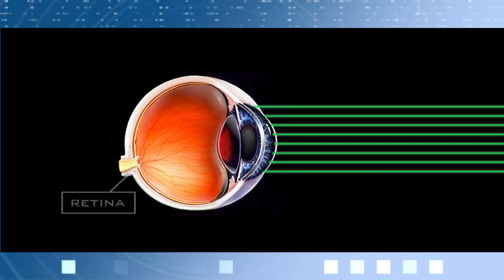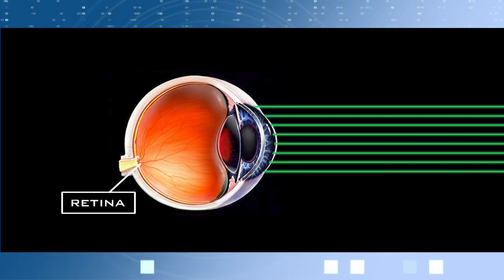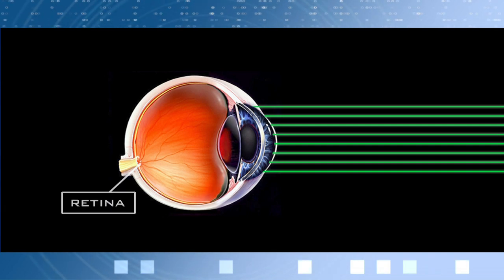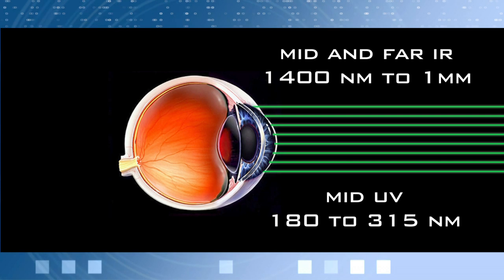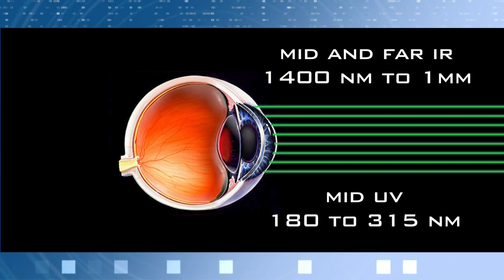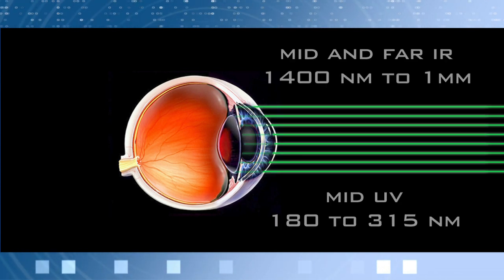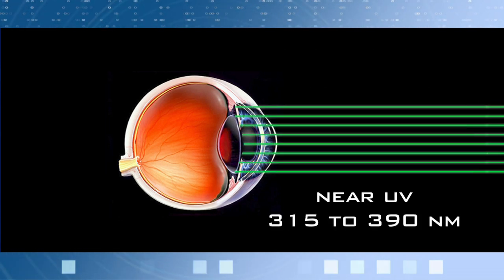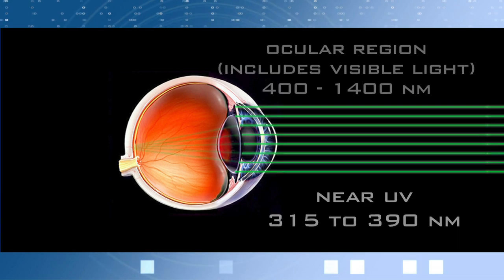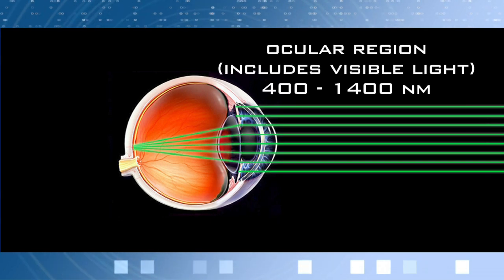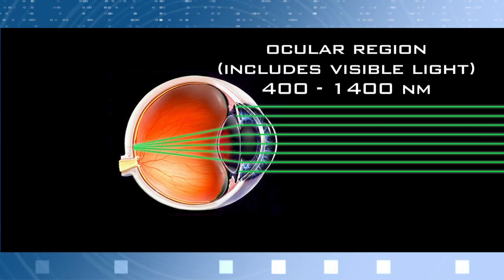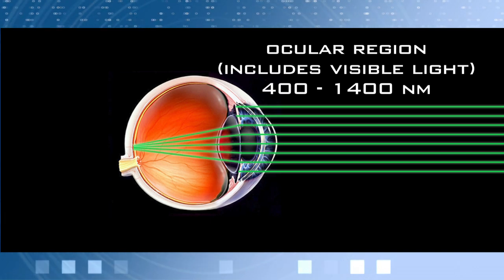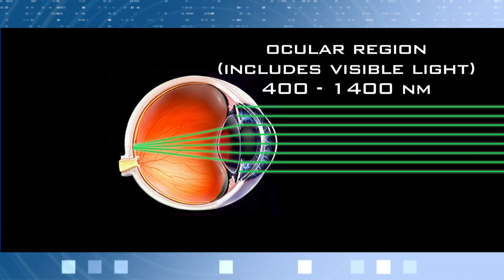The retina is a small area that provides detailed vision and color perception. Wavelengths in the mid and far infrared, as well as mid-ultraviolet, affect the most outer areas of the cornea. Near-UV wavelengths will damage the lens. The most dangerous wavelengths to the eye are those that focus on the retina — this range is called the ocular region and includes both visible and near-infrared.